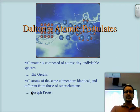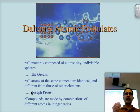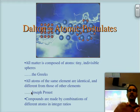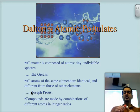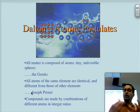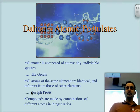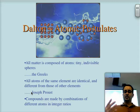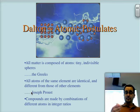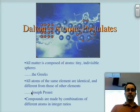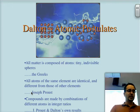The third postulate is that compounds are made by combinations of different atoms in integer ratios. If atoms are indivisible, you cannot mix atoms in fractions — you have to have a whole atom. That's obviously why we have the idea of the word integer. You have to have combinations of different elements in order to make a compound. This comes mostly from Joseph Proust and Dalton's own personal research.